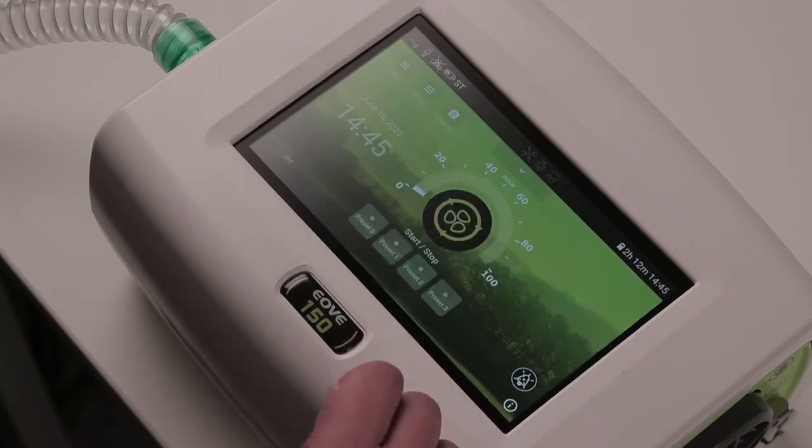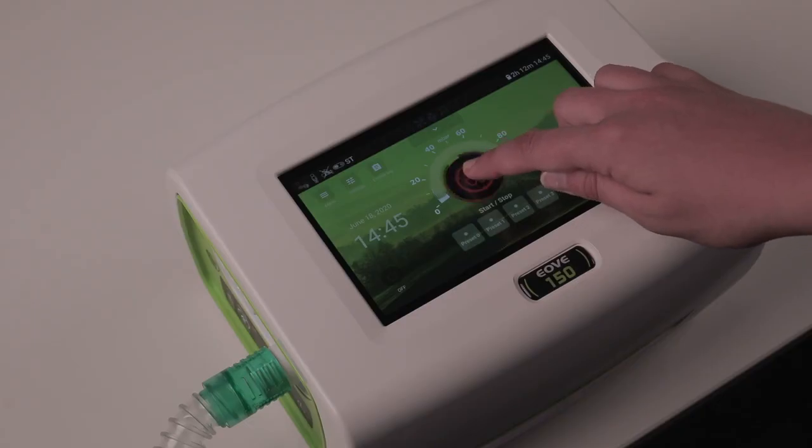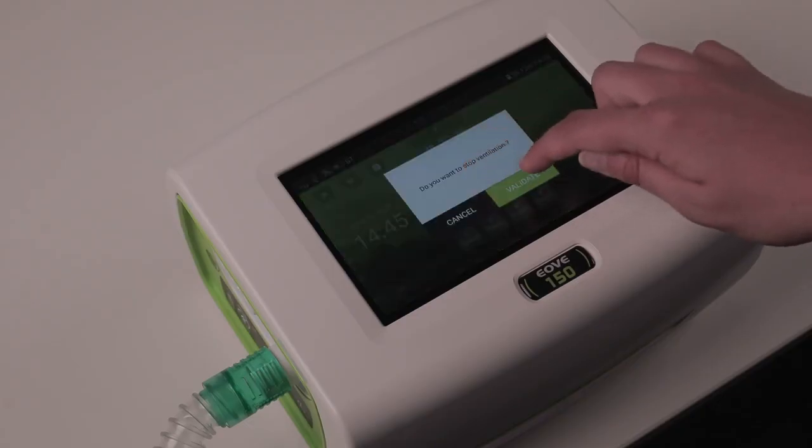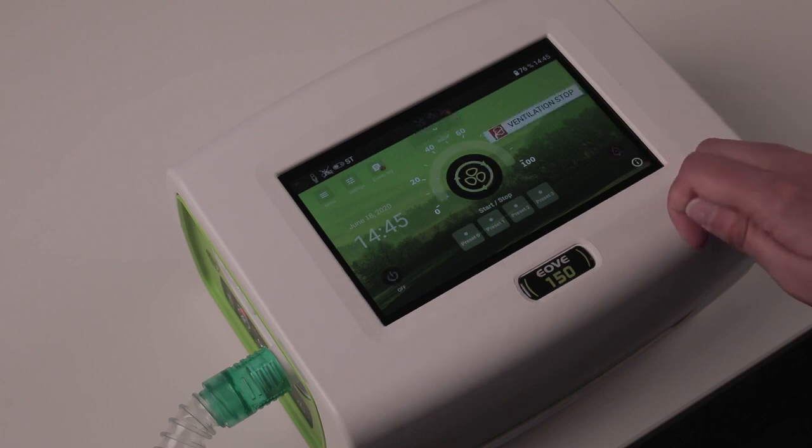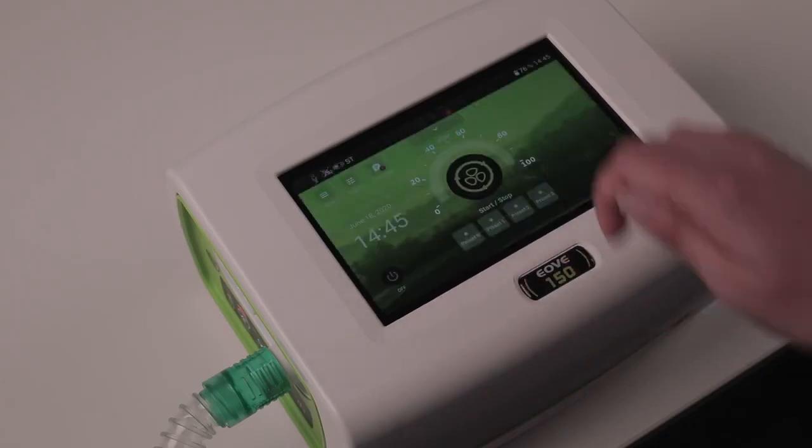To turn off the device, you have to first turn off the ventilation. Hold the start and stop button and validate. The blinking turbine icon shows you that the device is in standby mode. You can turn off the device by using the off button on the bottom left of the screen. Hold this button and validate.